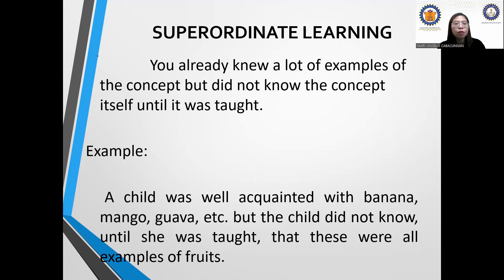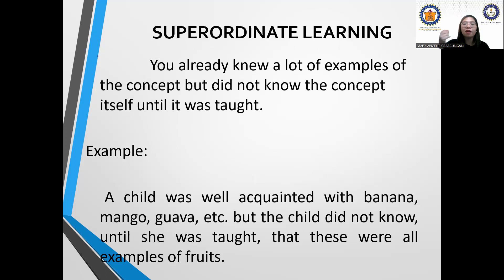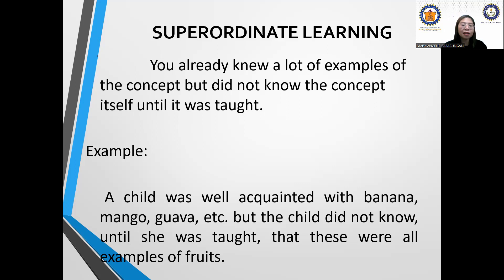Superordinate learning is when you already knew many examples of a concept but did not know the concept itself until it was taught. You need another person — a teacher or someone — who can teach you better, so you realize: 'Ah, so that's what it is.' For example, a child was well acquainted with banana, mango, guava, etc. These are all fruits, but the child did not know until she was taught that these were all examples of fruits.